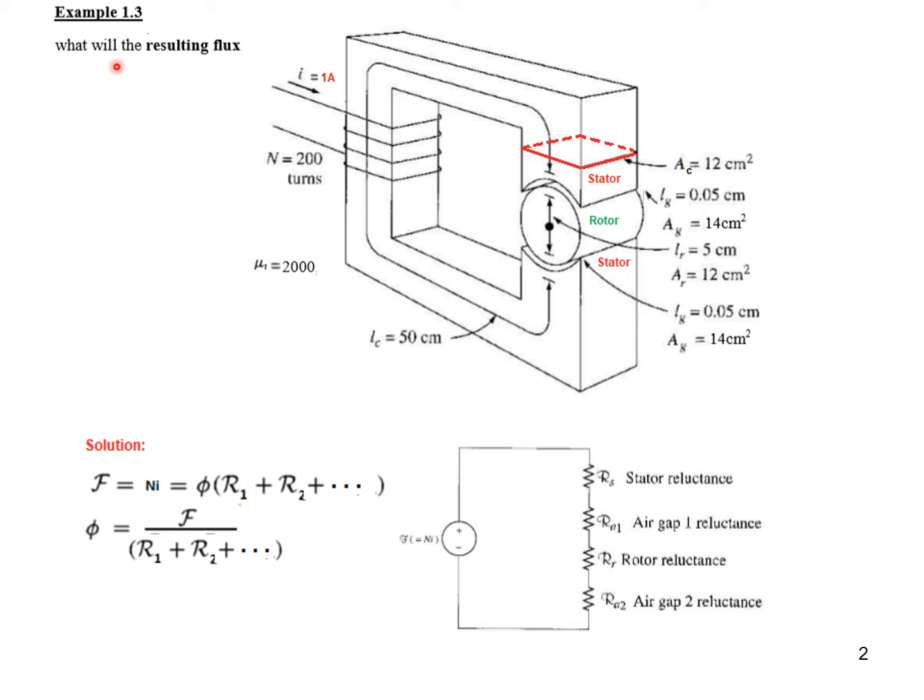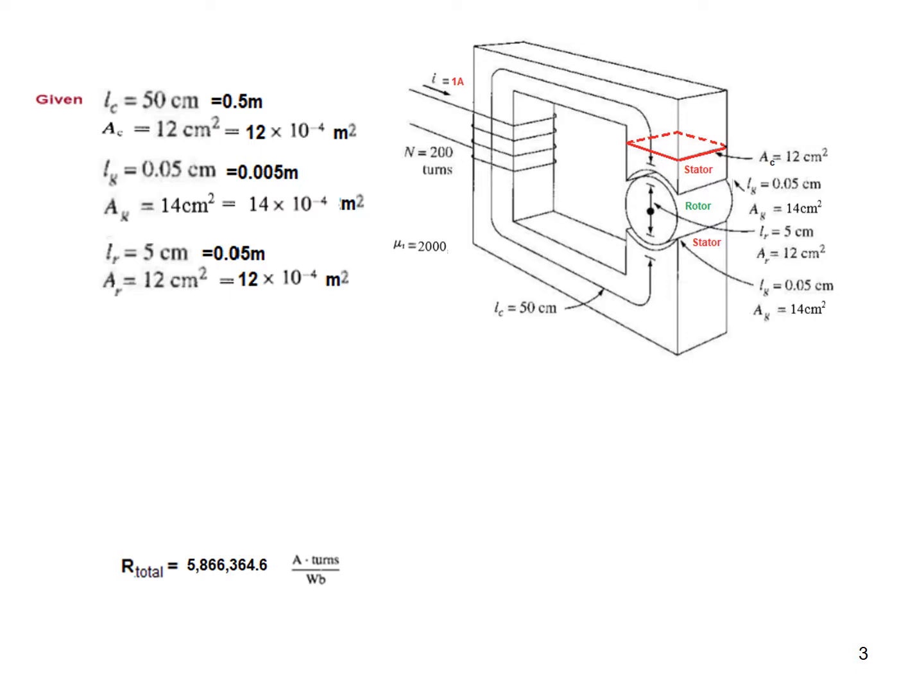We need to find the flux. The formula for flux is the magnetomotive force divided by the reluctances. The magnetomotive force is given as N into I. We know N and we know I, so we can find this.